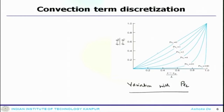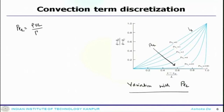One can evaluate the Peclet number and see how the solution varies. The analytical solution is primarily dependent on the Peclet number. At P_L = 0, there is a completely linear variation — this means no convection contribution, purely diffusion. As the Peclet number increases, the normalized profile changes: convection becomes increasingly important, and the effect of velocity U on the solution field becomes predominant, causing the scalar profile to vary significantly.